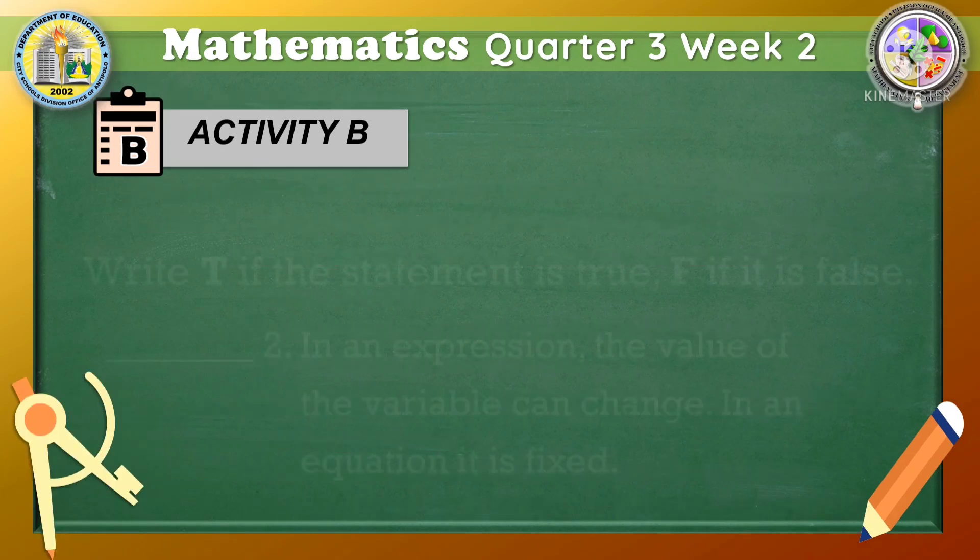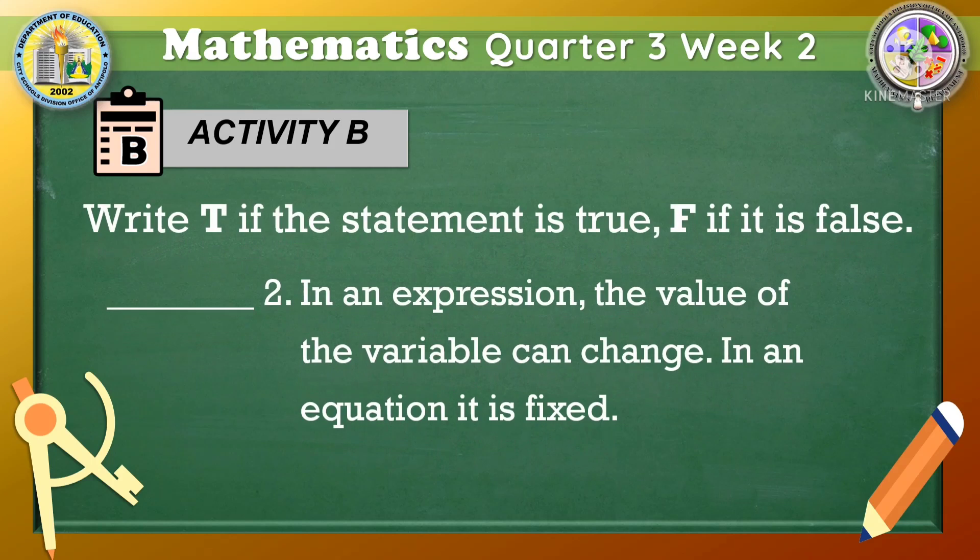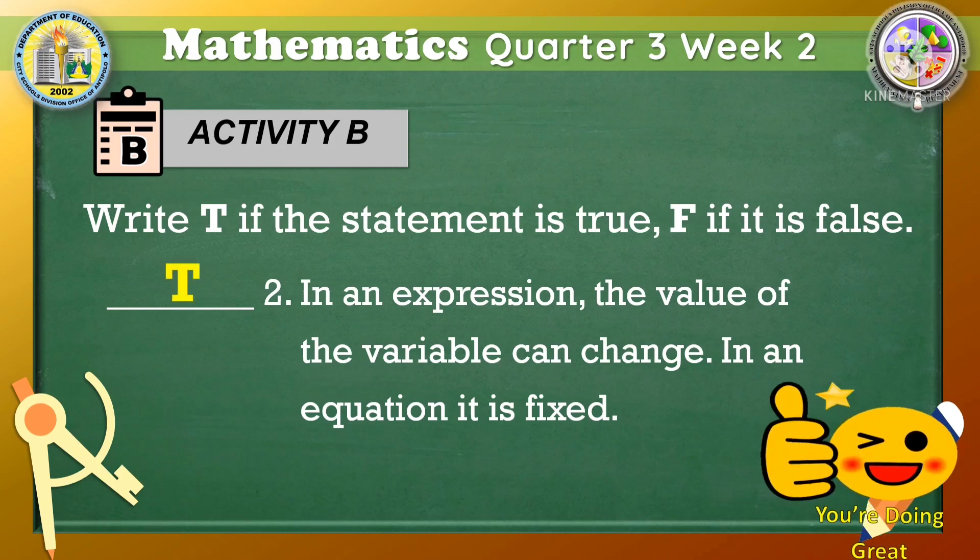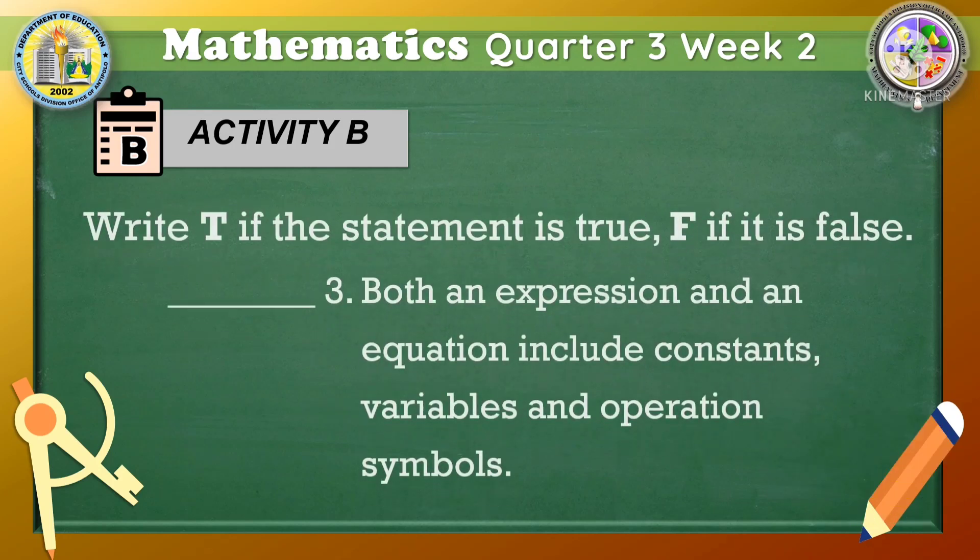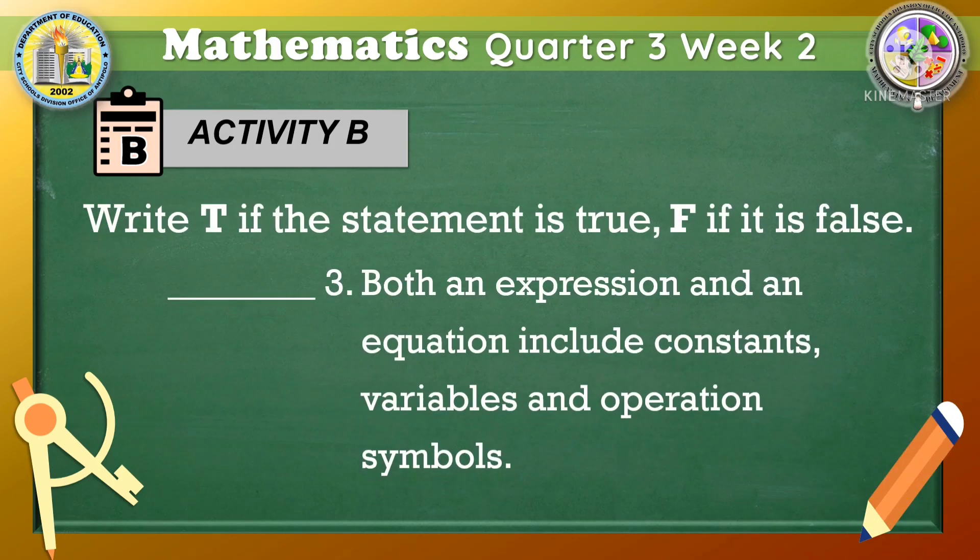Item 2. In an expression, the value of the variable can change. In an equation, it is fixed. Is your answer T? You're doing great! Number 3. Both an expression and an equation include constants, variables, and operation symbols. The correct answer is T. Did you get it right? Great job!